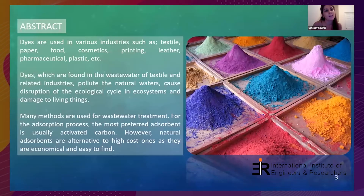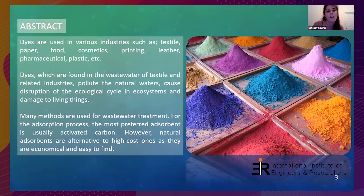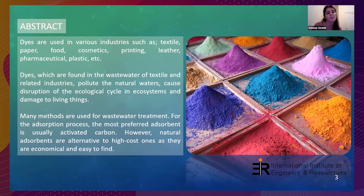Dyes are used in various industries such as textile, paper, food, and cosmetics. They are found in the wastewater of the textile industry and pollute natural waters, disrupting the ecological cycle and damaging living things. Many methods are used for wastewater treatment, and one of them is the adsorption process. The most preferred adsorbent is usually activated carbon, but natural adsorbents are an alternative because they are economical and easy to find.